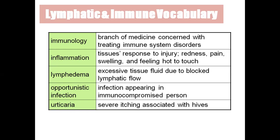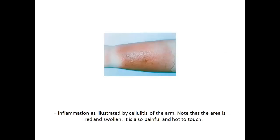Aged people are actually immunocompromised; if such a person gets any infection we call it an opportunistic infection — the bacteria or virus is taking an opportunity to infect that person. Urticaria is severe itching associated with hives. This is inflammation where the whole part of the limb becomes red and hot to touch and painful — we call that cellulitis.